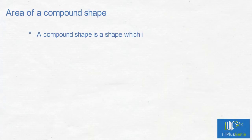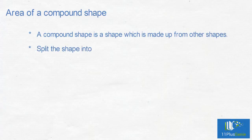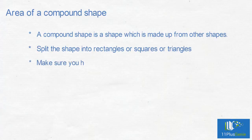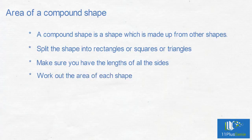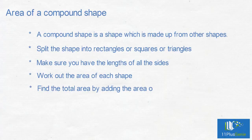A compound shape is a shape which is made up from other shapes. Split the shape into rectangles, squares or triangles. Make sure you have the lengths of all the sides. Work out the area of each shape. Find the total area by adding the area of each shape.